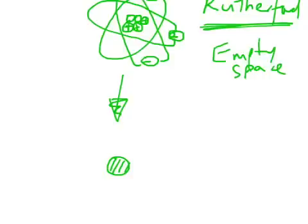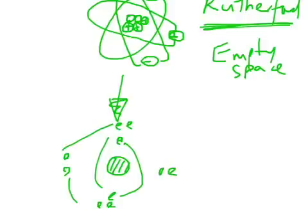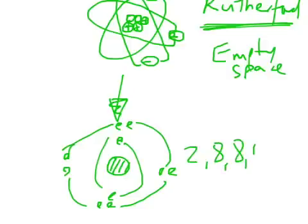Then you'd have your electron shells where you've got two, and then you've got eight, that's meant to be a shell, like a, carry on, two eights, eight, eight and so forth. So that's the Niels Bohr model.